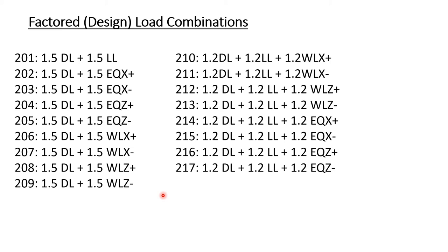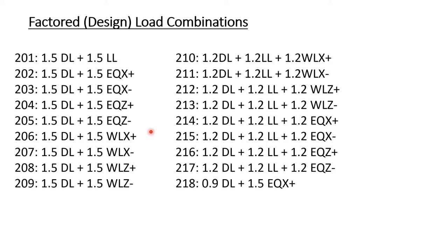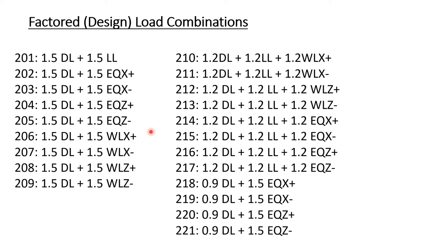Whenever we are using gravity loads combined with one lateral load, the code has reduced the factor from 1.5 to 1.2. This is because the probability of occurrence of all three at a time is a very rare combination. Hence, the code recommends reducing the factor from 1.5 to 1.2. The next load combinations are 0.9 dead load plus 1.5 earthquake load in positive x, negative x, positive z, and negative z directions. These are the 21 factored load combinations we will use.